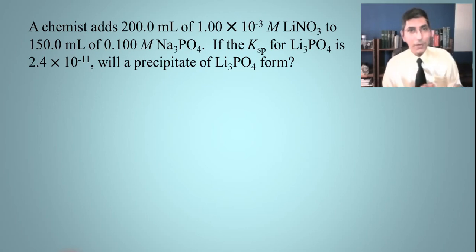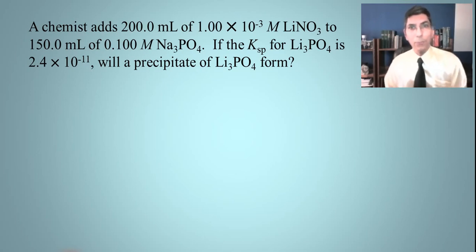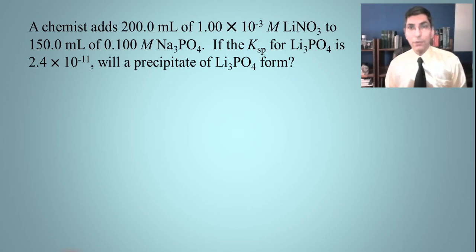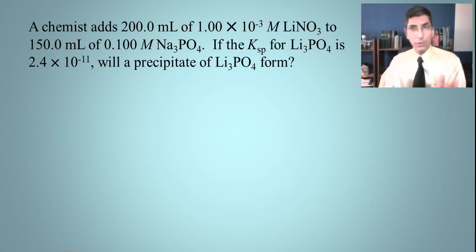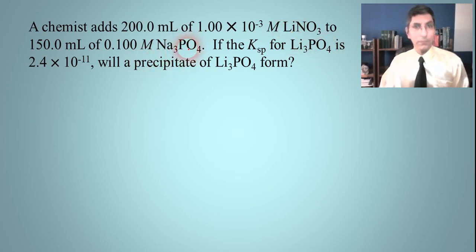Let's try one more example. A chemist is going to add 200 milliliters of 1 times 10 to the negative third molar lithium nitrate to 150 milliliters of 0.1 molar sodium phosphate. If the KSP for lithium phosphate is 2.4 times 10 to the negative 11th, will a precipitate of lithium phosphate form? We have the right ions — lithium from lithium nitrate, and phosphate from sodium phosphate.